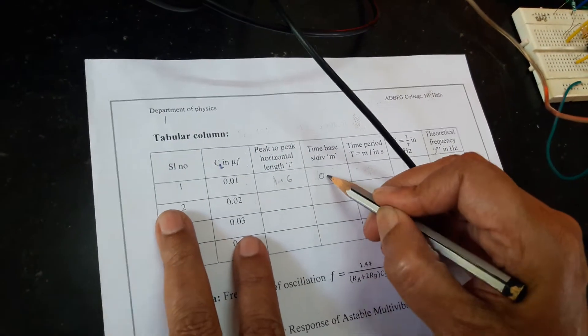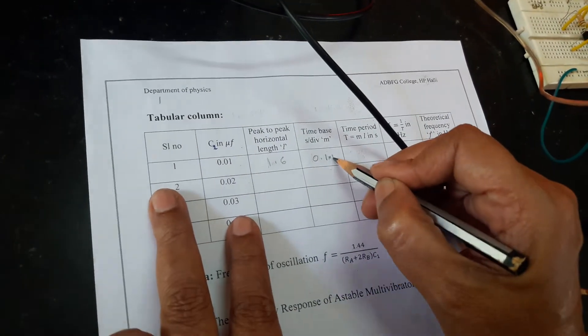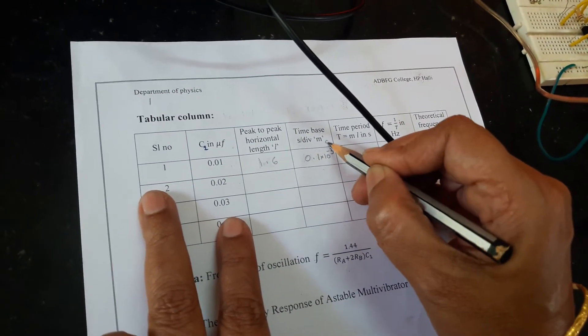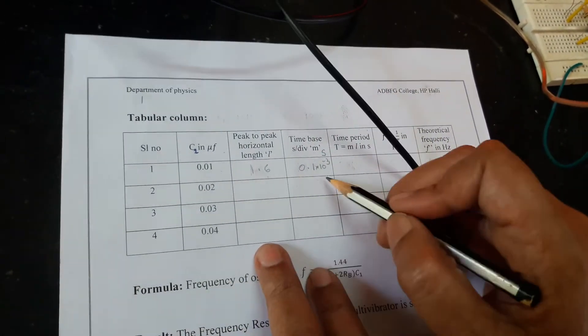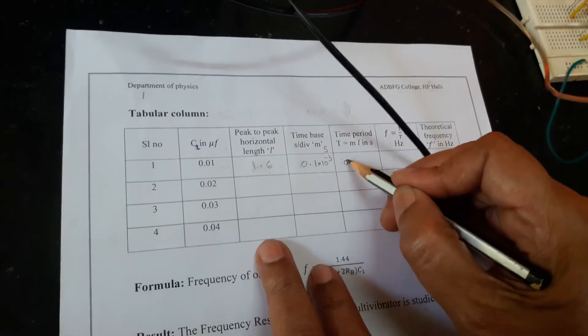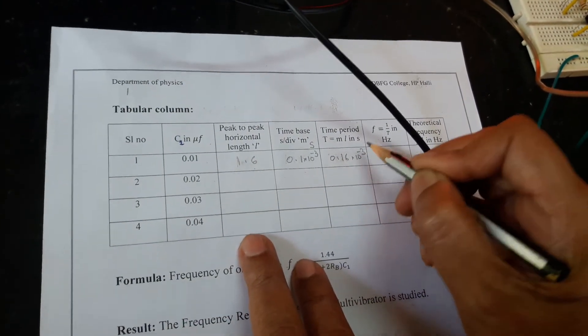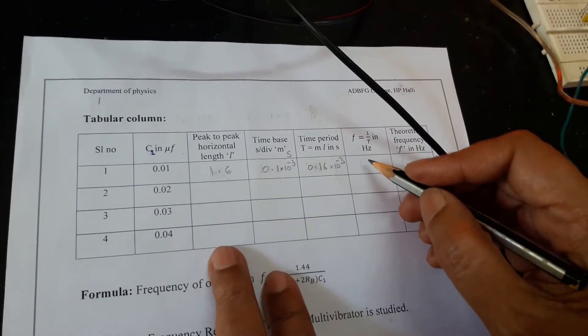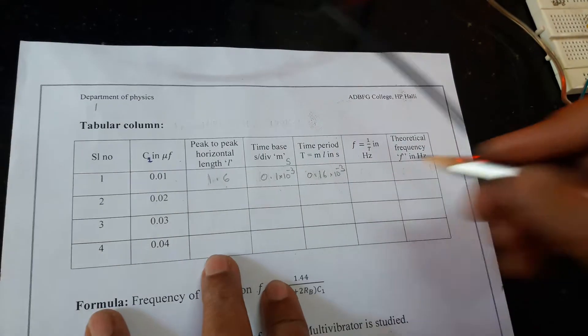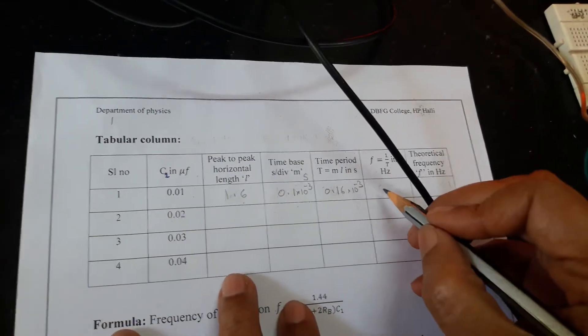Time base, I have kept it for 0.1 milliseconds. Milliseconds means you write it as 10 raised to minus 3 seconds here and the time period can be calculated by multiplying these two. This we will get it as 0.16 milliseconds. Now, you calculate the frequency using the formula reciprocal of the time period. We will get this value as 6.25 kilohertz.